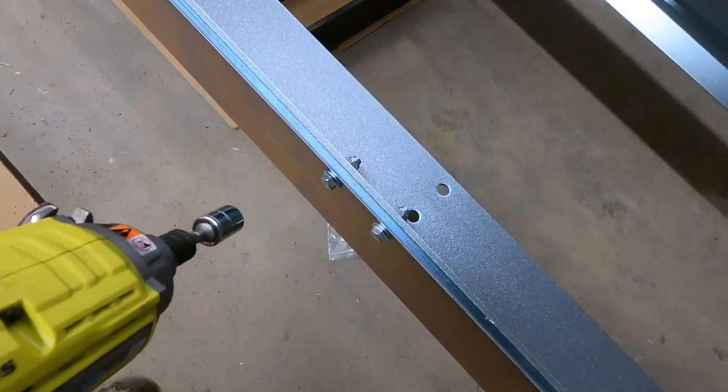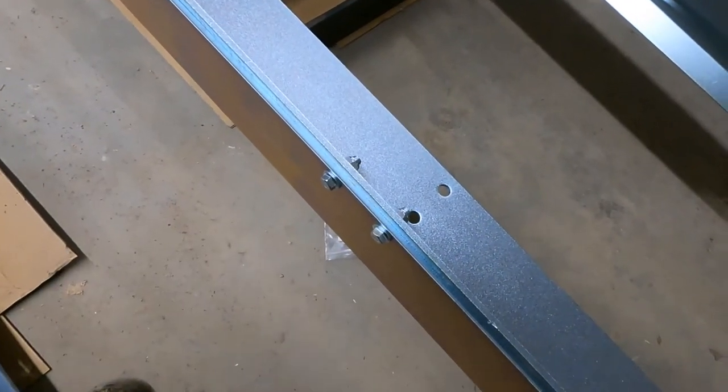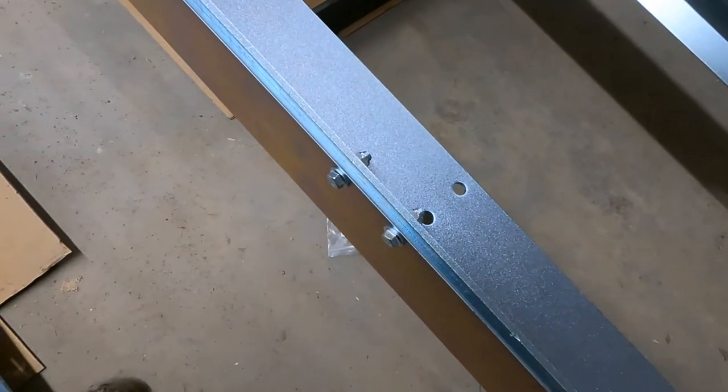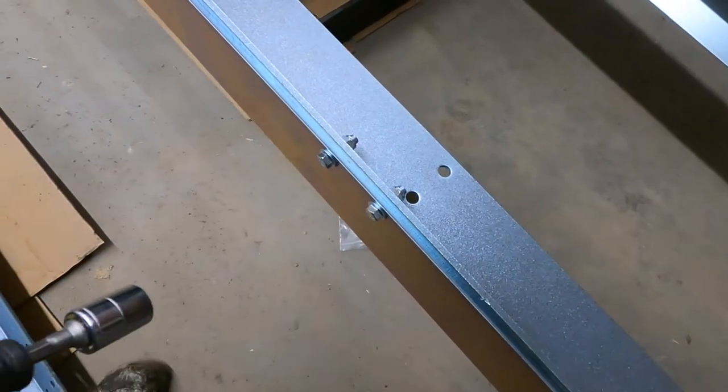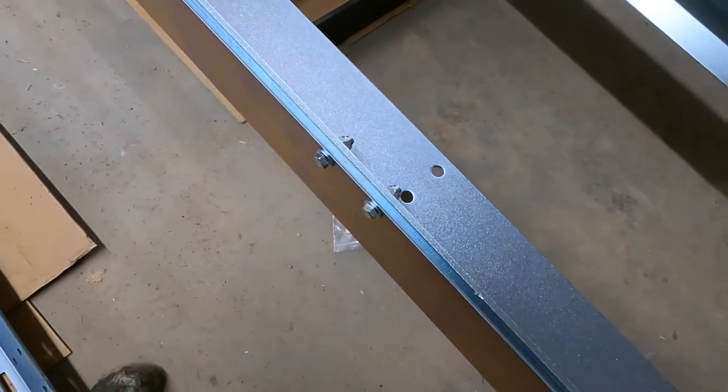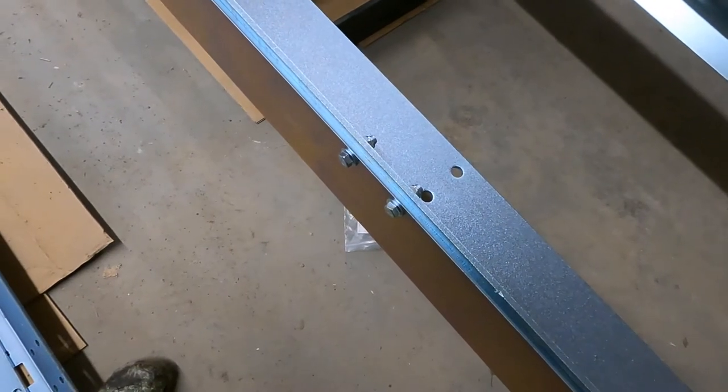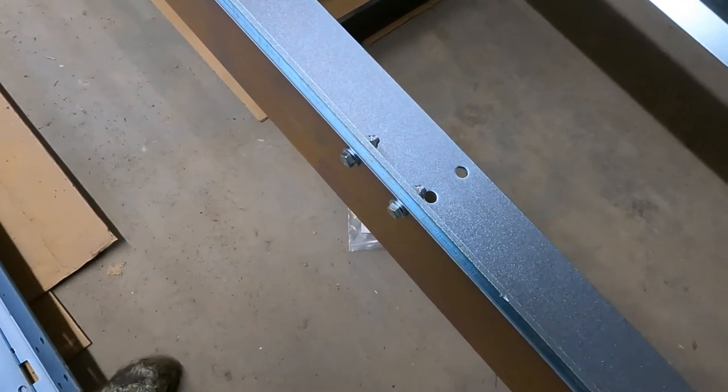Once it's hanging free on those you'll be pretty close to that 10 to 13 millimeter separation that you need between the side rail and the track, but the final adjustment will have to be made under some amount of snugging on the bolts.